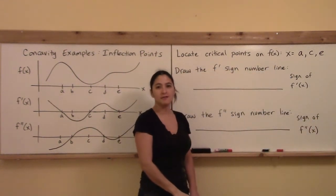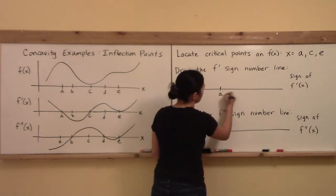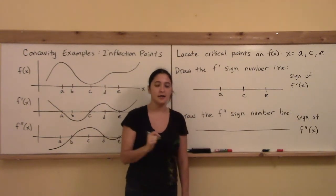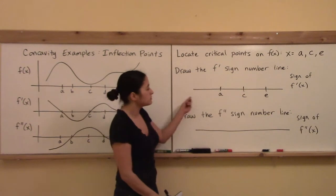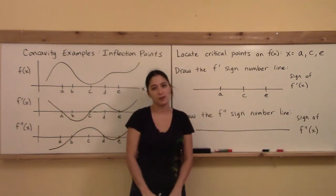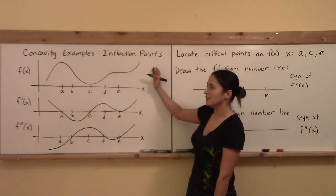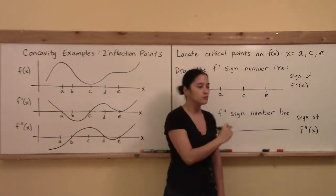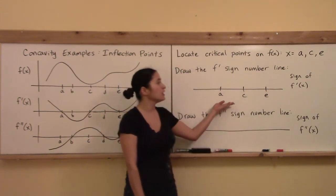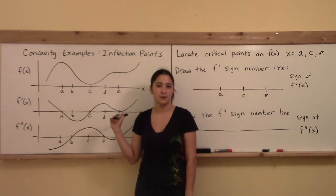This is the first step in the four-step method of classifying all relative extrema. We find the critical points, tick them off on the number line at A, C, and E, and then fill in the sign. If we had a functional form for the derivative, we'd use test points inside these regions. But since we don't have a functional form, we use the picture of f or f' to fill out the rest of the f' sign number line. Go ahead and pause the video and try to fill in the rest of the f' sign number line, then use the first derivative test to confirm the classification.